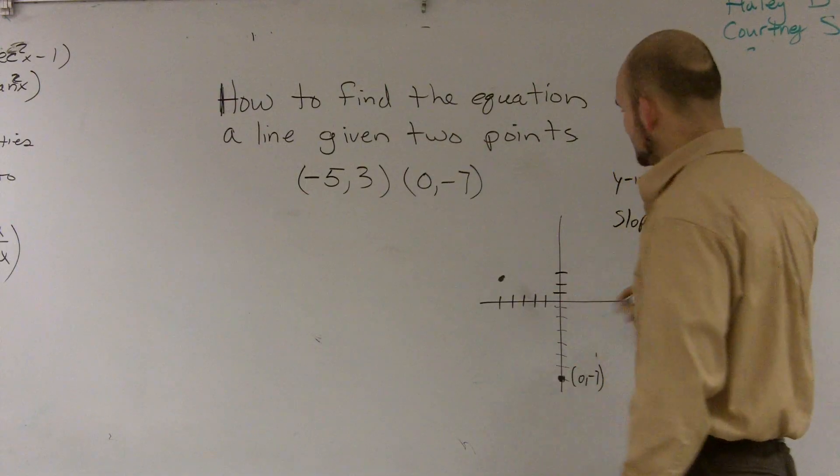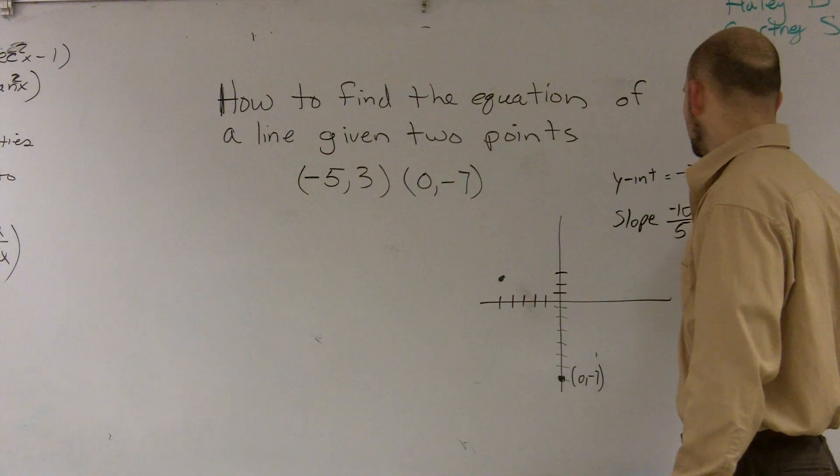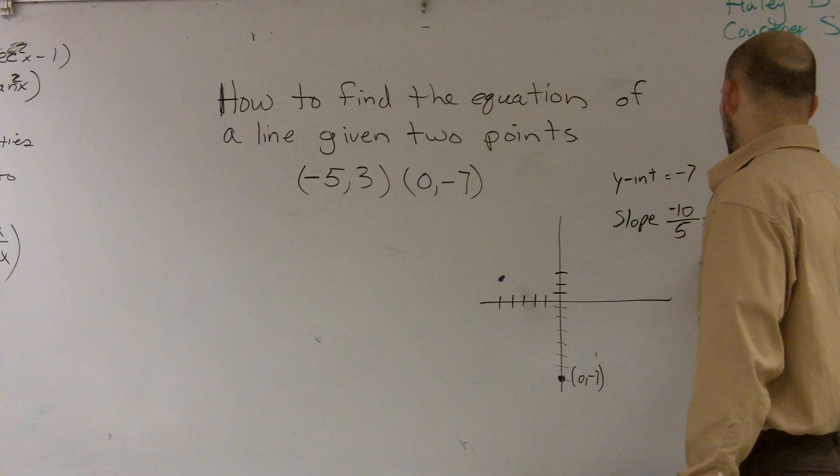Slope is your change in y, which is down how far? Which would be down 10, over 5, to the right 5, which is a negative 2 over 1.